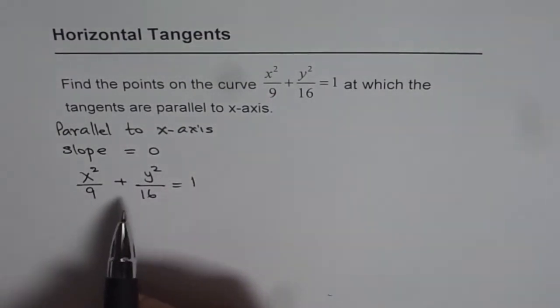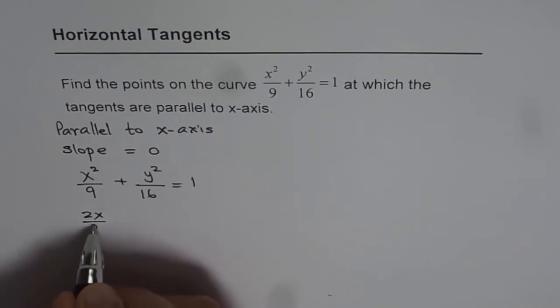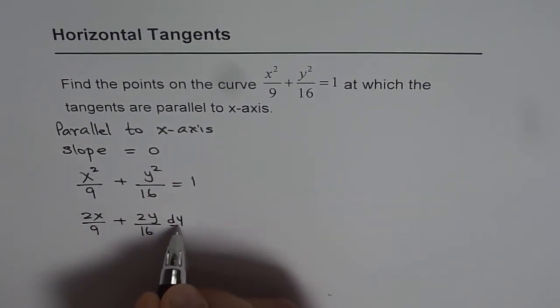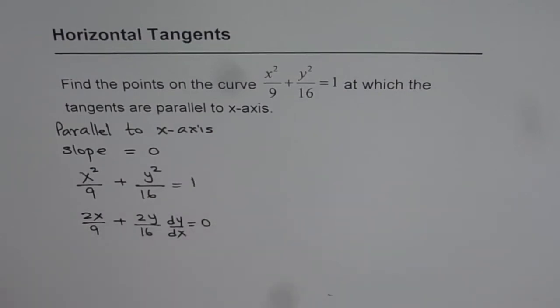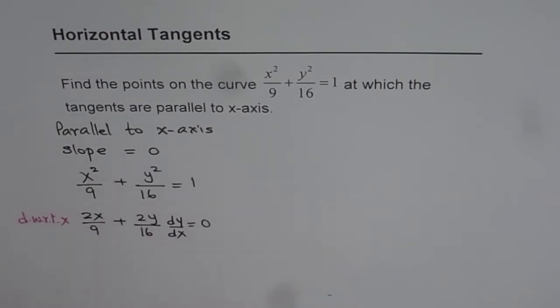Now if I differentiate with respect to x on both sides, what do I get? I get 2x/9 + 2y/16 dy/dx. We are differentiating with respect to x on both sides.